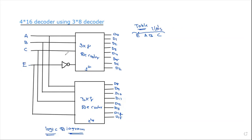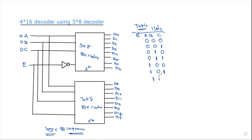Here we have the tabular form showing the inputs and corresponding outputs for the 4 by 16 decoder.